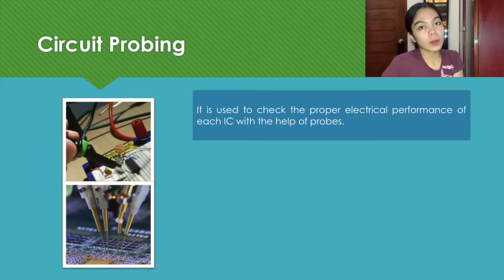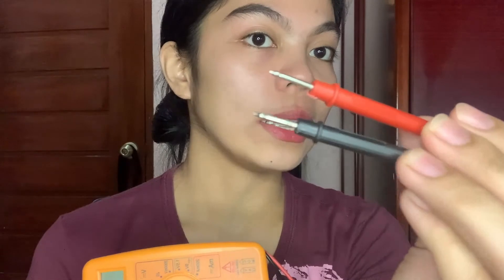The fifth term is circuit probing. It is used to check the electrical performance of each IC with the help of probes. Example of circuit probing is the use of DMM. As we can see, the probes are a little bit bigger compared to what we use in IC because, of course, an IC is smaller. So, we use thinner and smaller probes, which is shown in the picture.